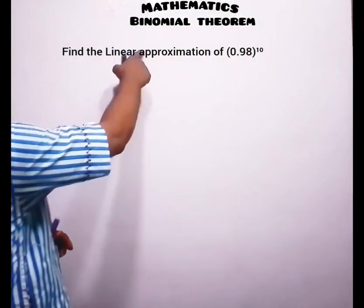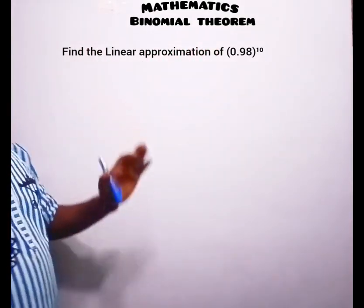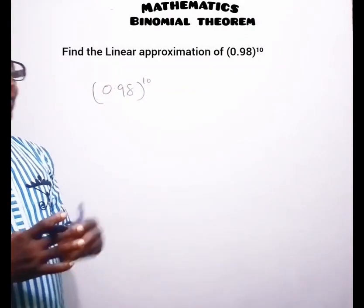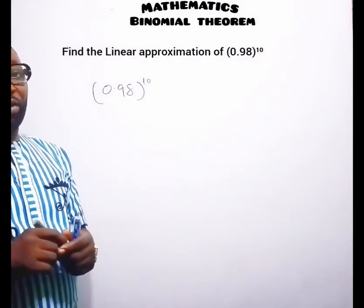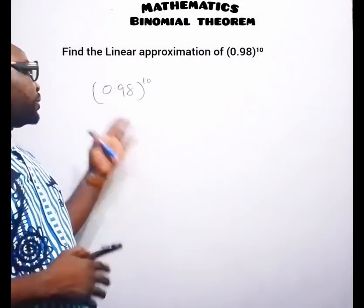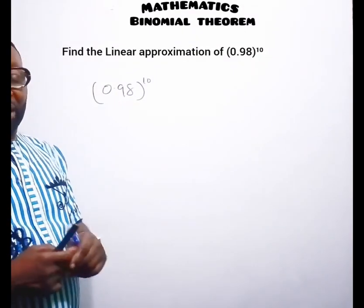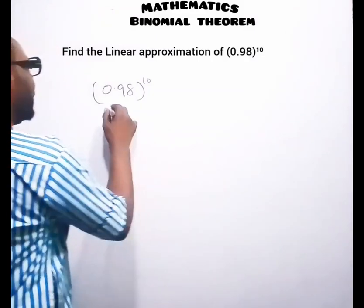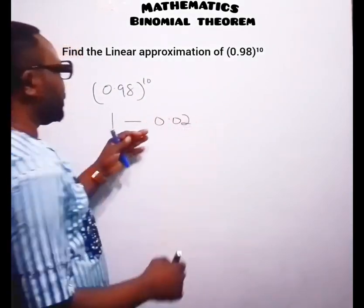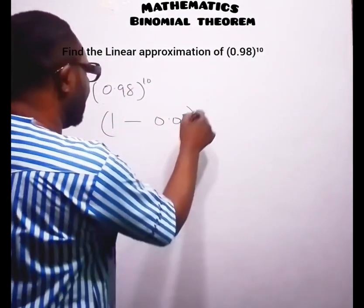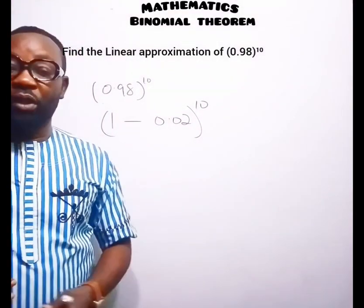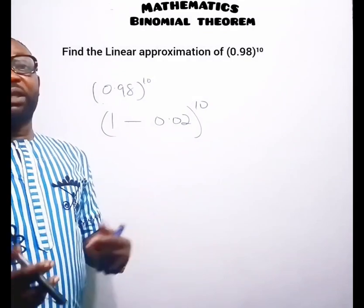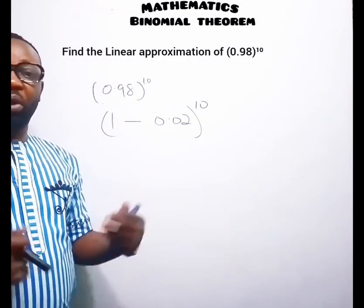The next question asks us to find the linear approximation of 0.98 raised to the power of 10. This question is slightly different from previous ones because here we subtract a value from 1 to get 0.98. Specifically, 1 minus 0.02 equals 0.98. Previous questions mostly involved adding a small value to 1, so this example shows how to handle subtraction cases.